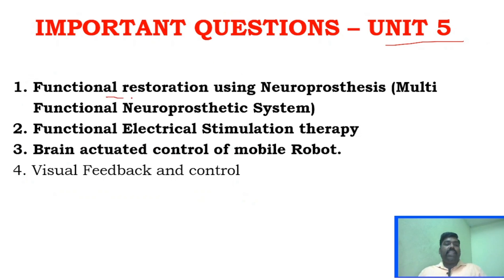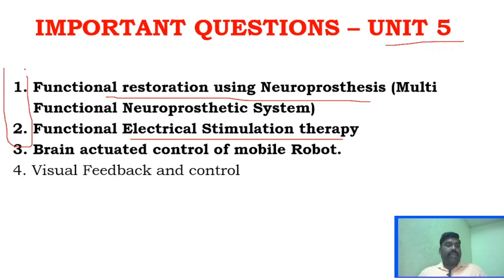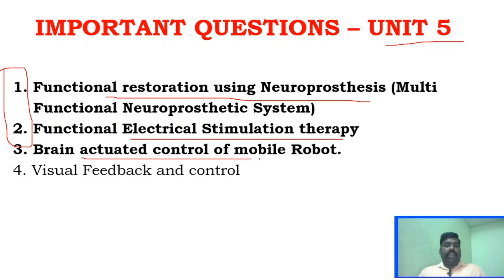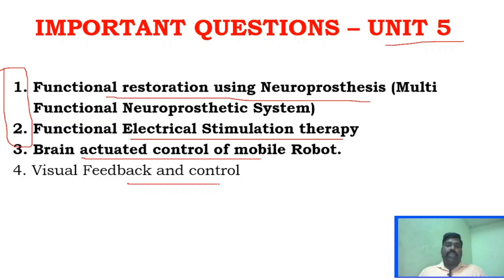For Unit 5, the important question is: Functional Restoration Using Neuroprosthesis and Functional Electrical Stimulation Therapy — this question is more than enough. Also note the application of mobile robot control from Unit 5.